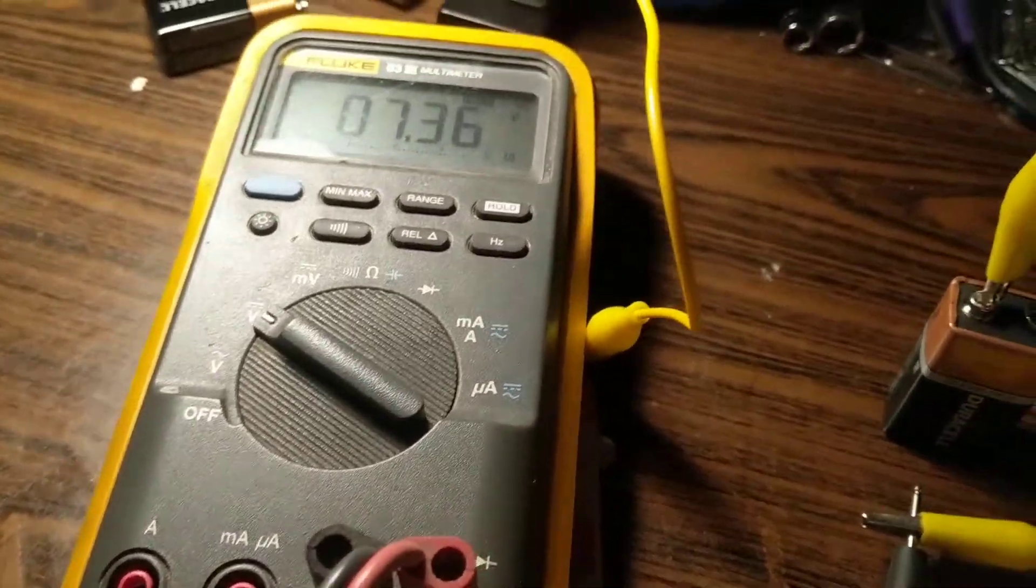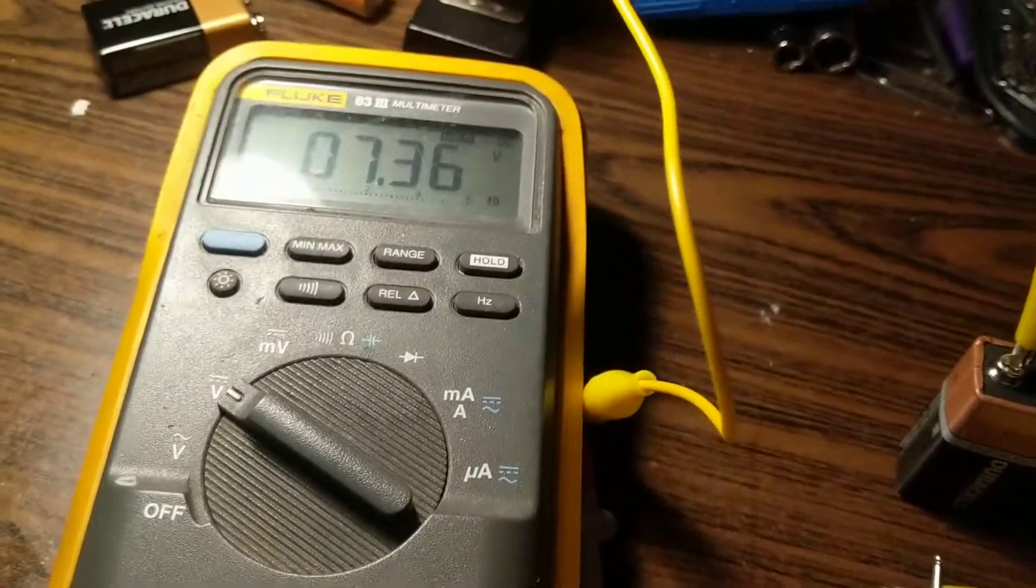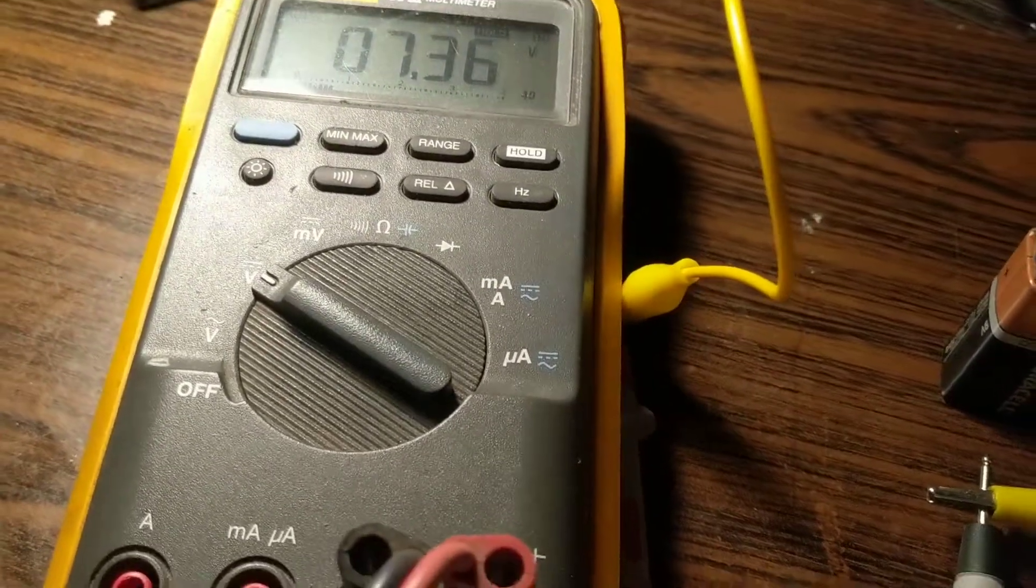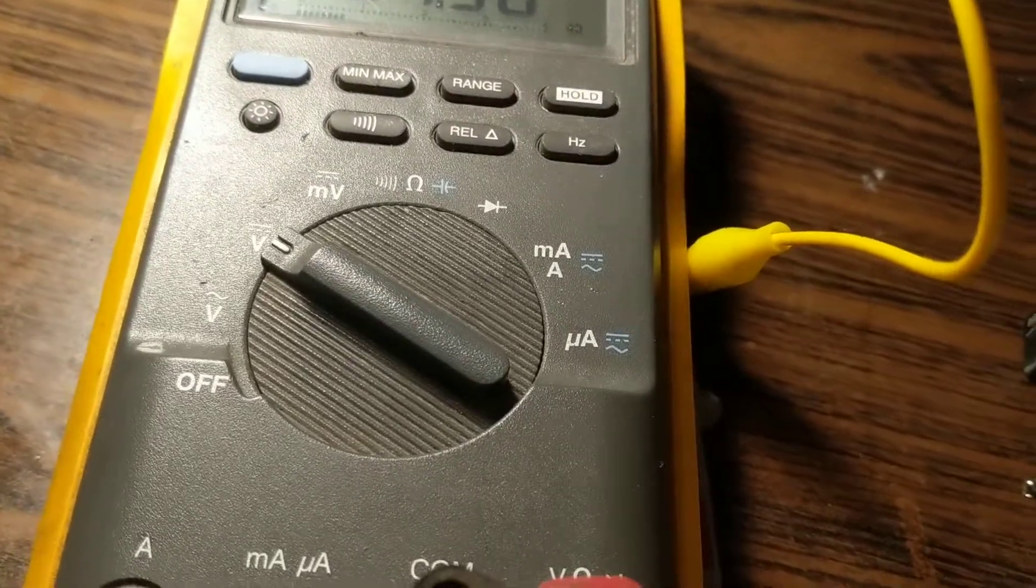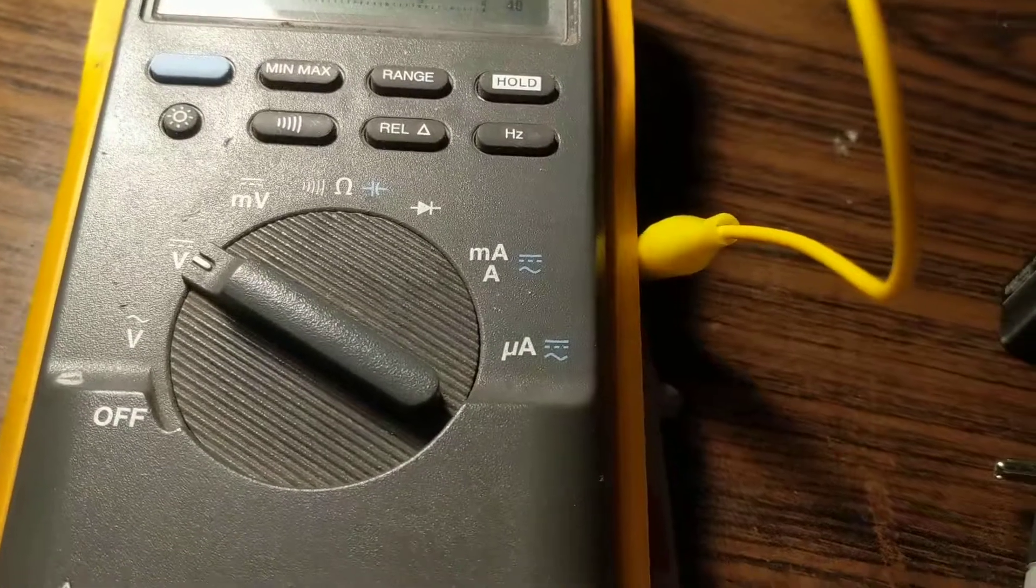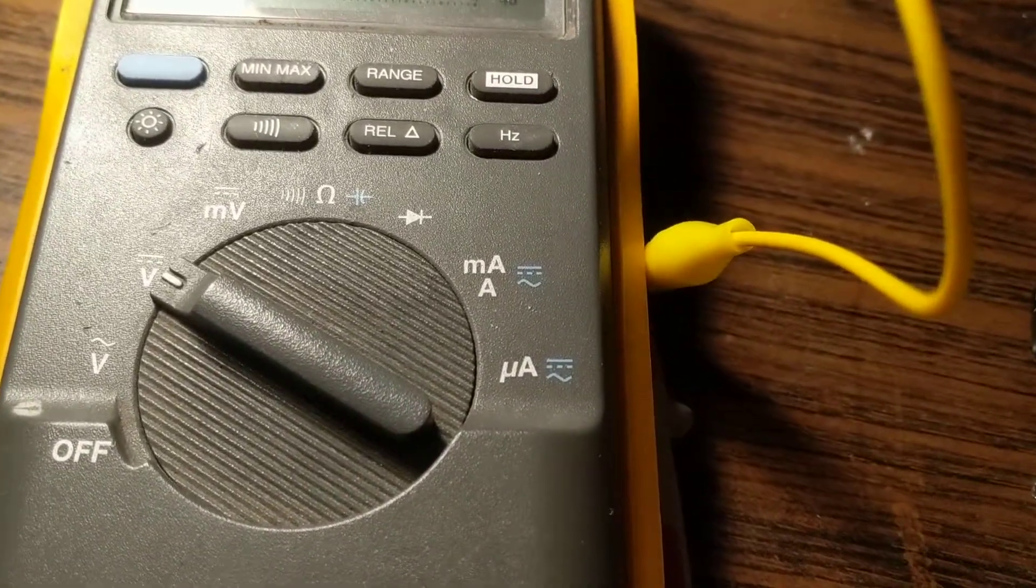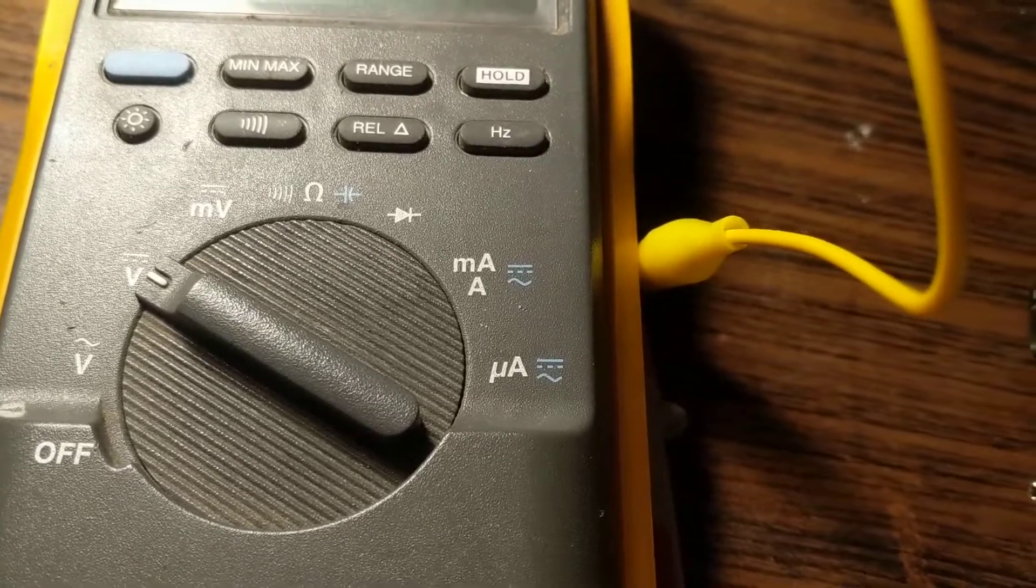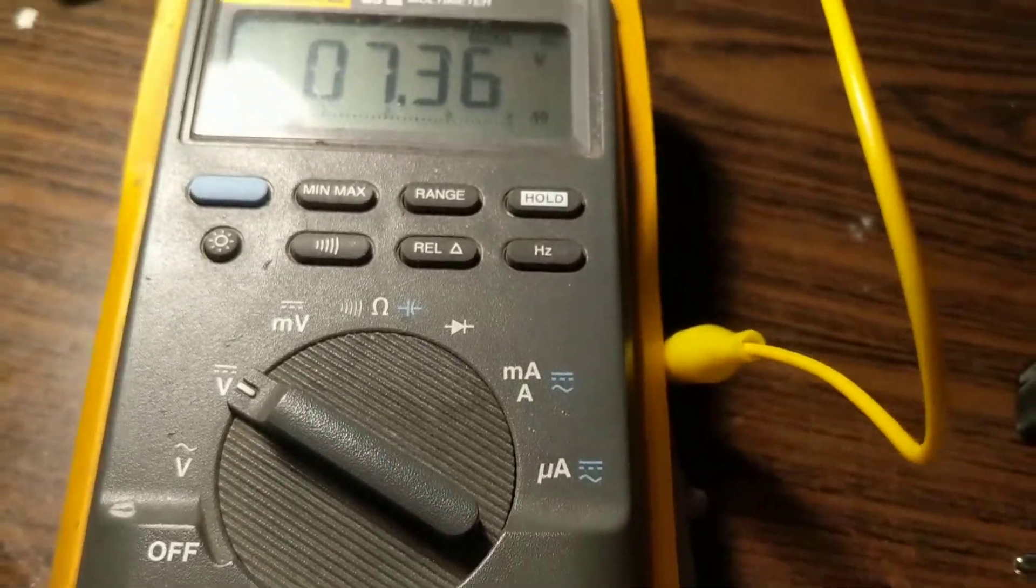Hello again everybody, now a tutorial about the basics of how to use a multimeter. A multimeter functions are to measure voltage AC volts, DC volts, current for DC and AC, ohms, capacitance, and diode tests. We're going to go over the basic functions now.